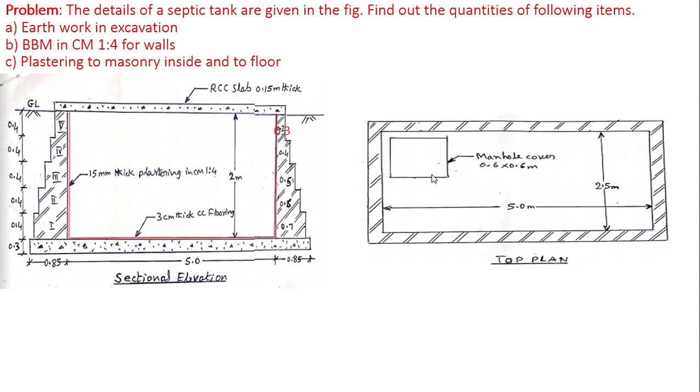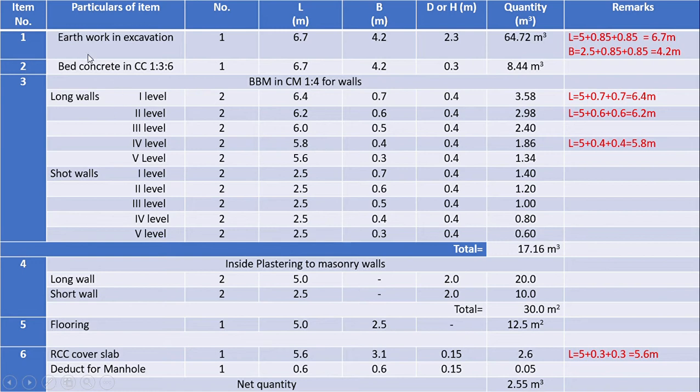Item one is earthwork in excavation. As you know, the septic tank is constructed underground by excavating the earth. It is a rectangular underground tank. The length of excavation is equal to clear inside length of the tank, that is 5.85 meters. Length of excavation is 6.7 meters. Similarly, width of excavation is equal to clear inside width of the tank.